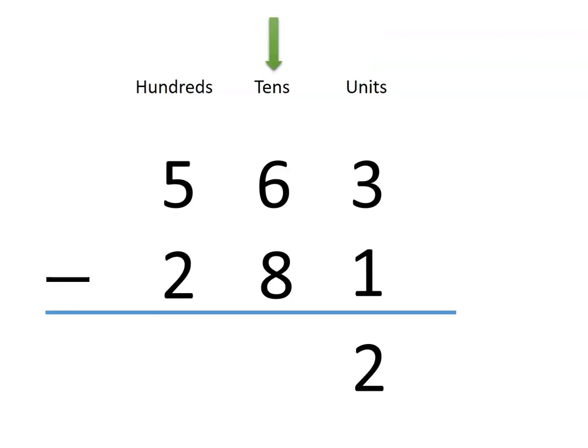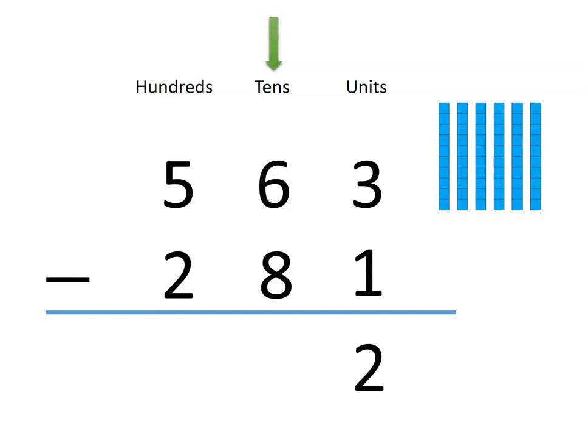Things get trickier when we look at the tens. We have 6 tens, but we want to take away 8. What should we do?